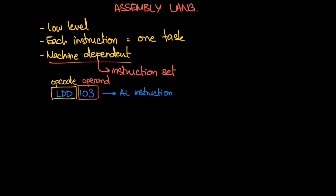There are some instructions which do not require an operand, but every single instruction definitely has an op code. The op code basically tells the computer what to do — are you adding, are you storing somewhere, are you incrementing or decrementing? The operand tells us what to operate on: if you're adding, what are you adding? If you're storing, where are you storing it? If you're fetching something, where are you fetching it from?